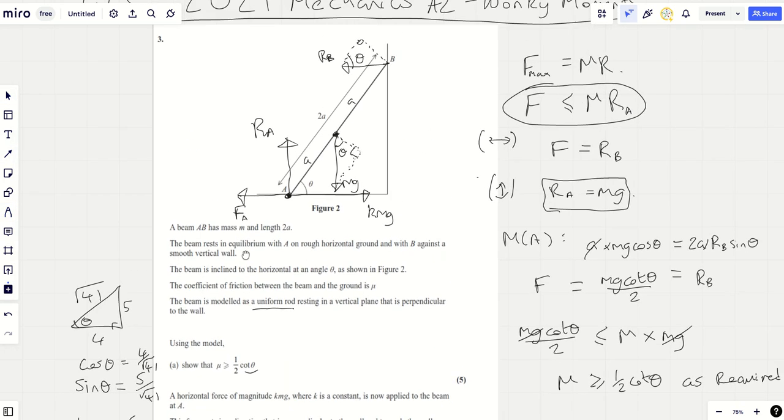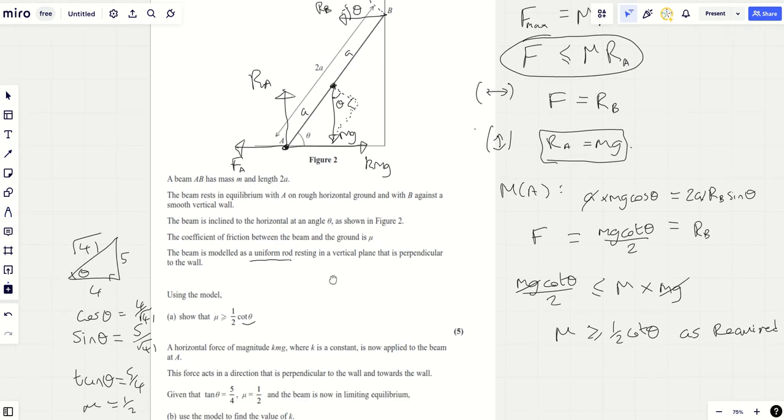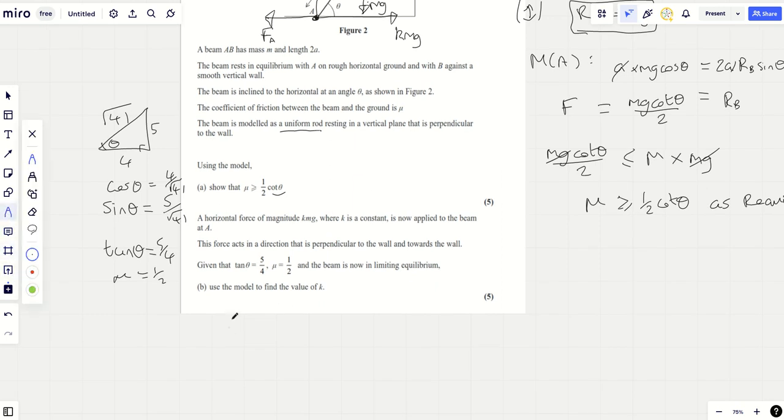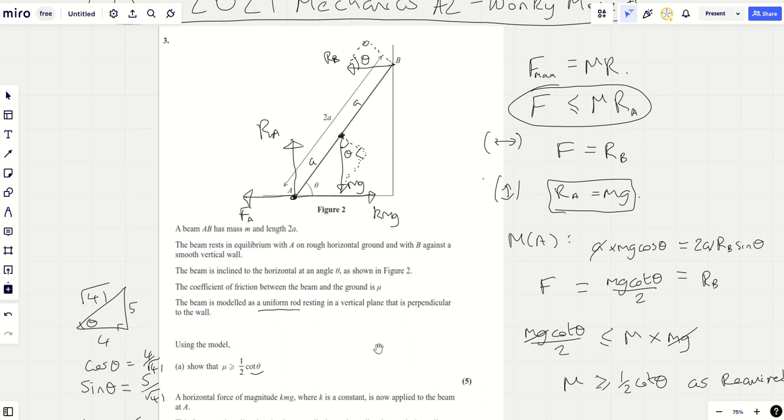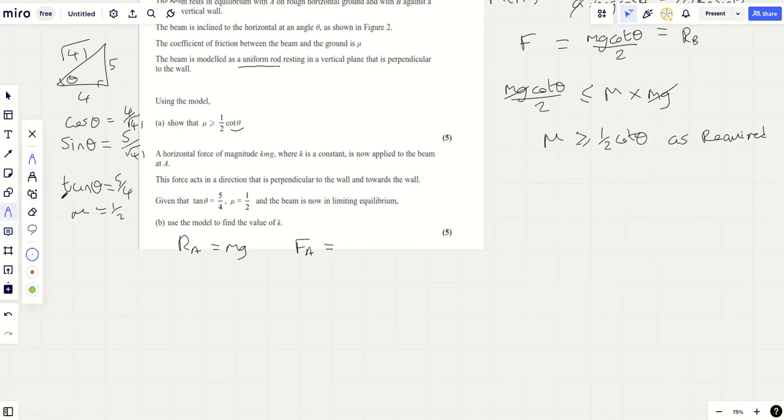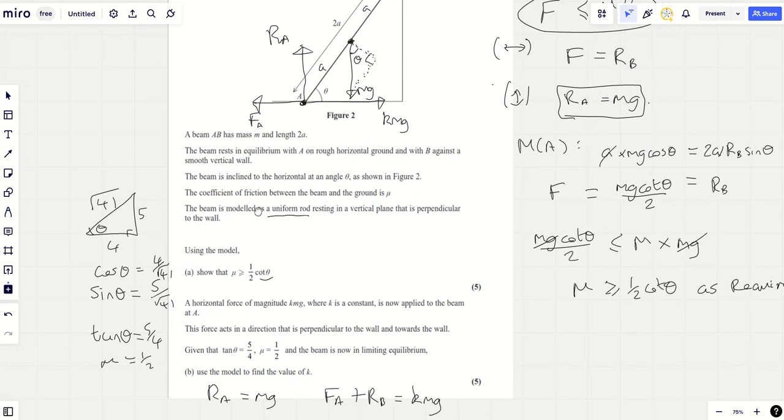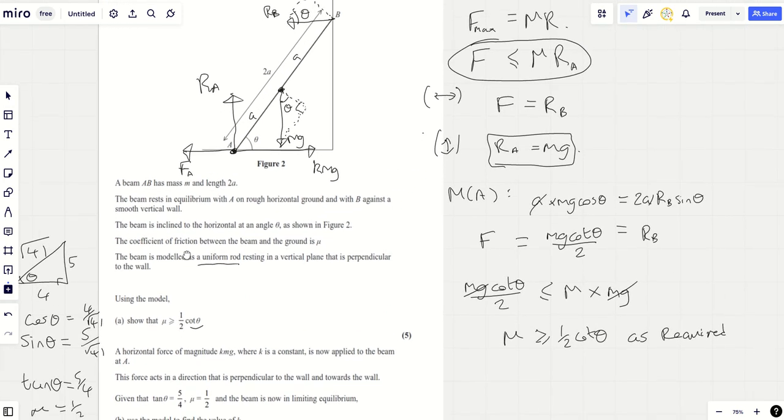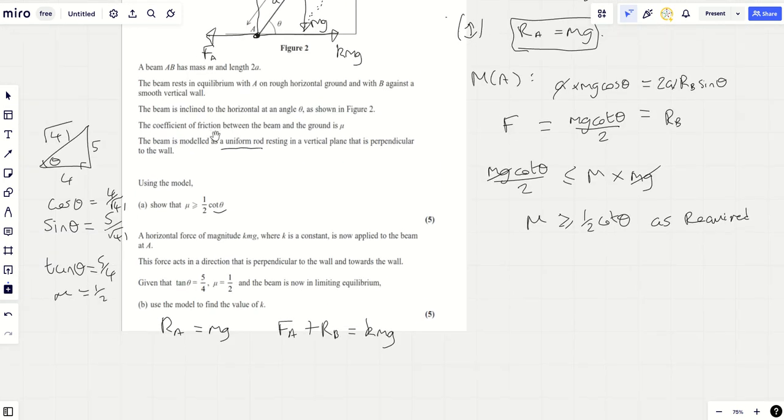Use the model to find the value of K. Okay. So let's do the same thing as before. Lefties equal righties, upies equal downies. So RA is MG. That's the upies equal downies. Lefties righties. We're going to have FA plus RB equals KMG. Now we always have to take moments somewhere. We've done the lefty righty's upy downy's.